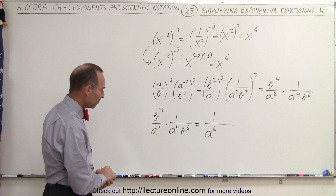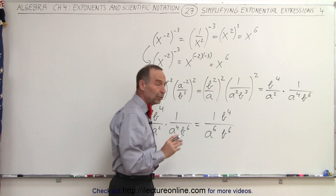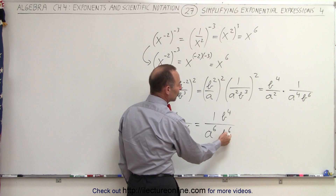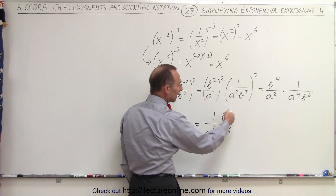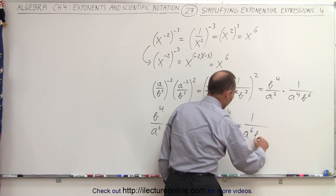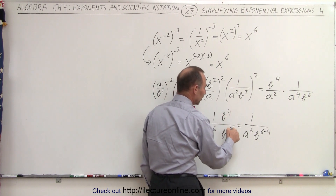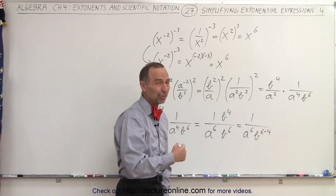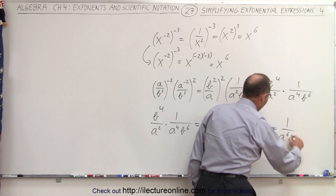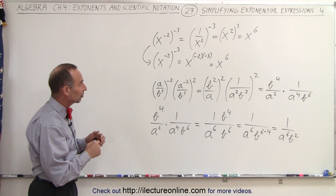But what about the b? We have b to the 4th in the numerator and b to the 6th in the denominator. The largest positive exponent is in the denominator, so instead of moving this to the numerator and ending up with a negative exponent, we write this as 1 over a to the 6th times b to the 6th minus 4. Because when we bring the positive 4 from the numerator to the denominator it becomes negative, so we subtract it. This becomes 1 over a to the 6th b to the 2nd power. And that's how we simplify that initial expression.